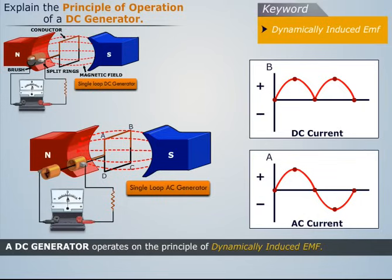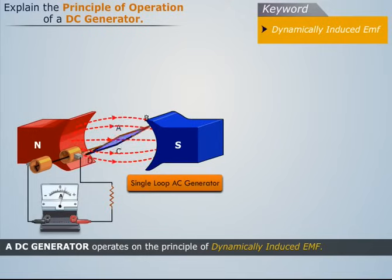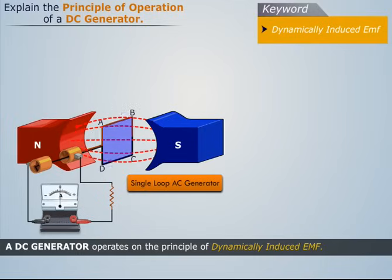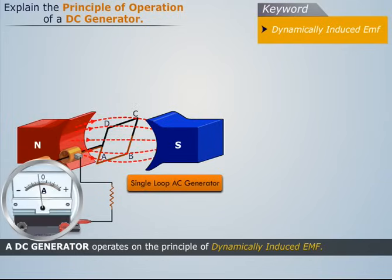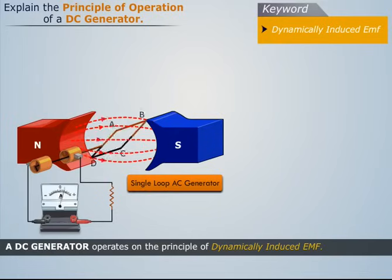We see that as the position of the rotating coil changes in the magnetic field, the flux linked with it also changes. Thus an EMF is induced in the coil in accordance with Faraday's laws of electromagnetic induction. This induced EMF is proportional to the rate of change of the linked magnetic flux.